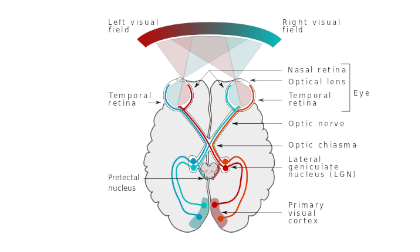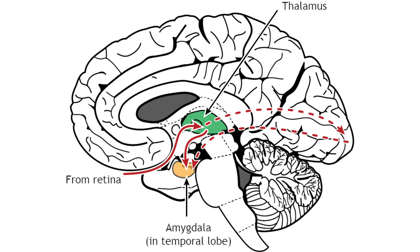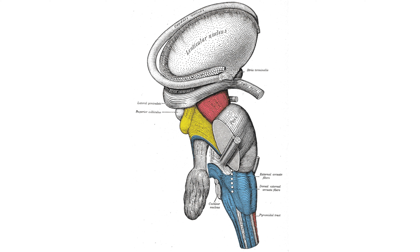The LGN is nestled within the thalamus, deep in the brain. It's a part of the diencephalon, and it's lateral, meaning it's away from the midline. The label geniculate comes from the Latin word genu, meaning knee — it was named because it was thought to resemble a knee.